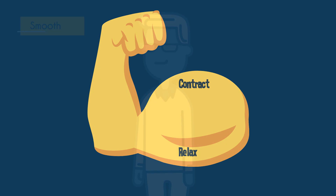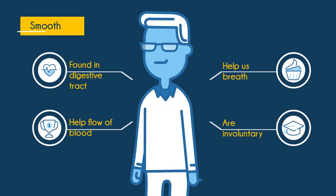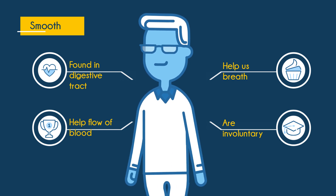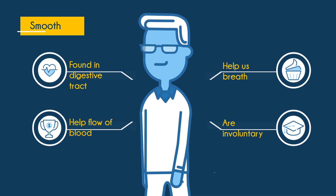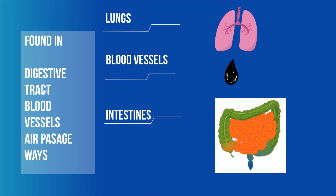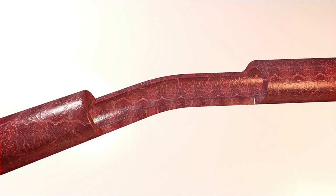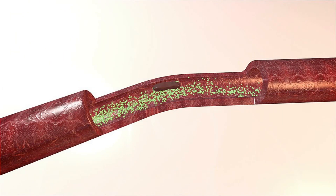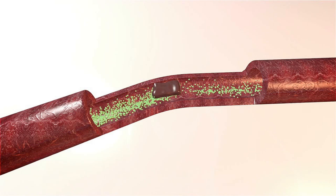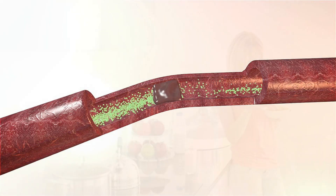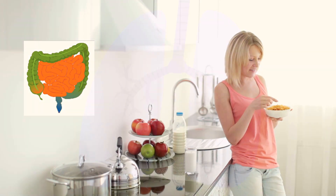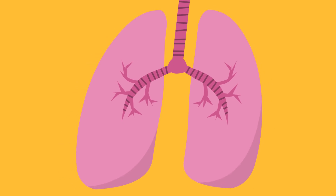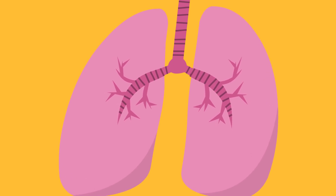Smooth muscles are involuntary, so they are not under our conscious control. They are found within certain organs, blood vessels, and airways. Smooth muscles may facilitate the movement of blood by changing the diameter of the blood vessels, allow for the internal movement of food, and control the movement of air by changing the diameter of the airways found in our lungs.